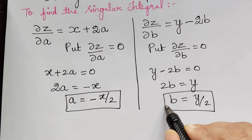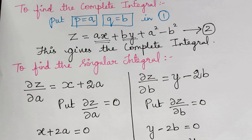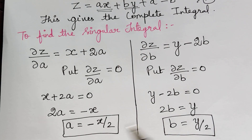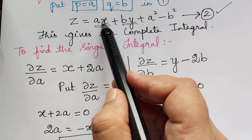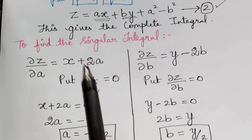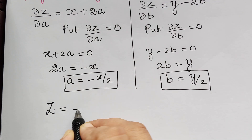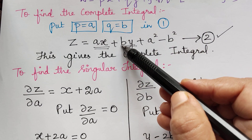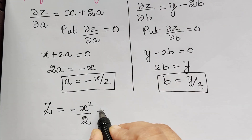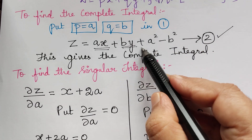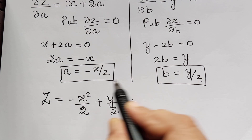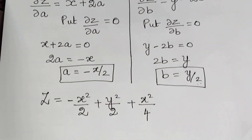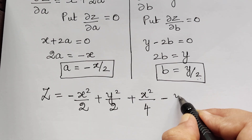So we have got the values of a and b. Now we substitute these into the complete integral, equation 2. So z = (-x/2)·x + (y/2)·y + a² - b², which gives z = -x²/2 + y²/2 + x²/4 - y²/4.